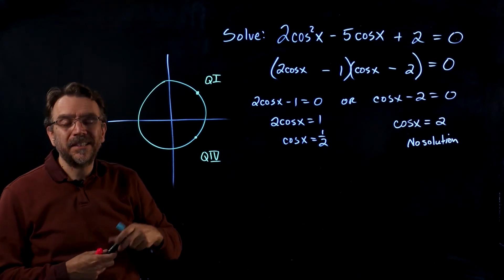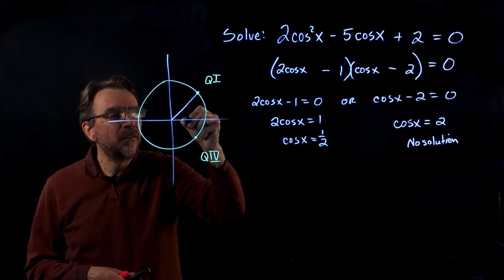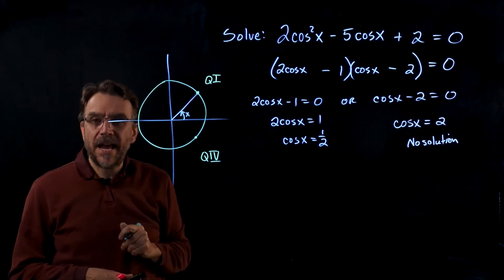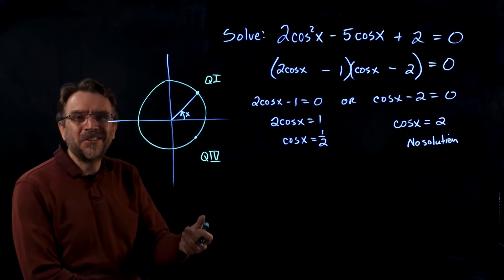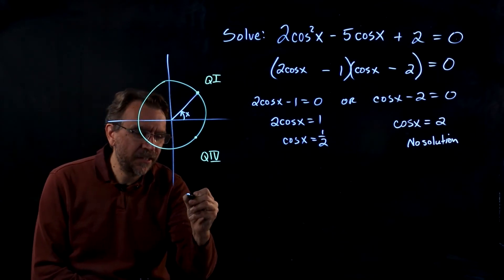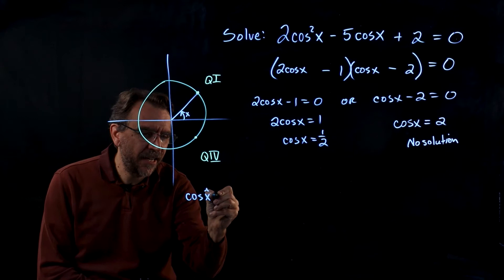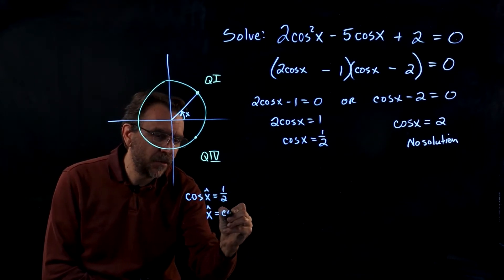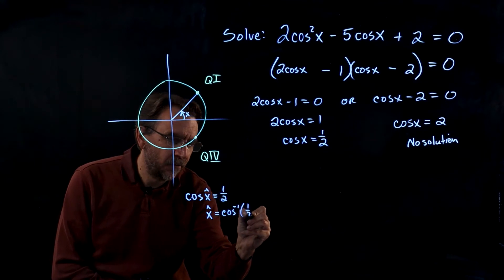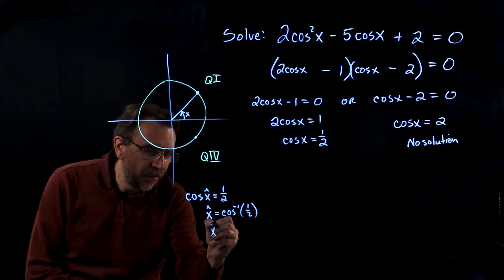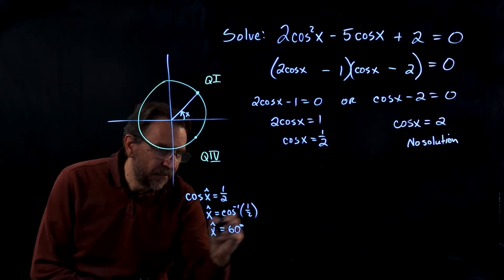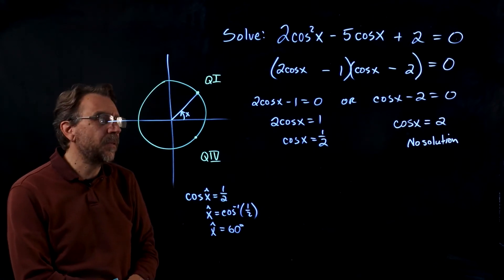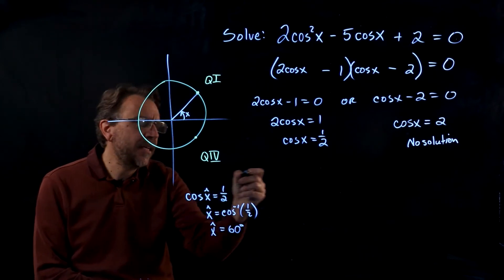Now in q1, the angle that we're looking for here is the actual reference angle. So to get the reference angle, we'll look at cosine of x hat equals 1 half, or x hat equals cosine inverse of 1 half. Now we know that's 60 degrees.